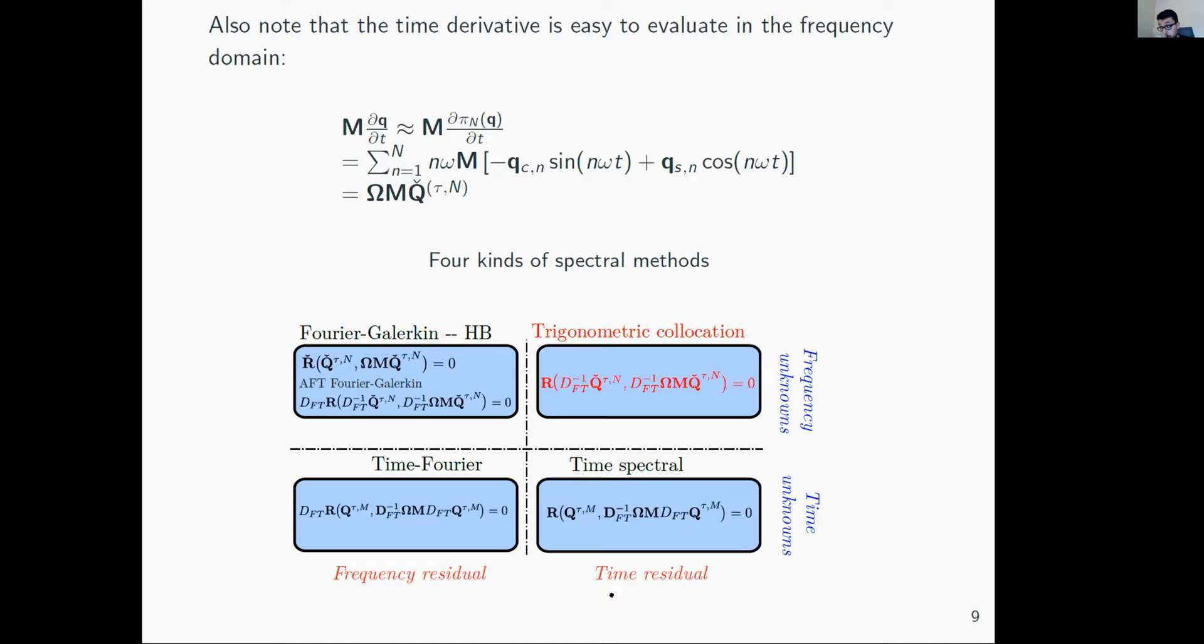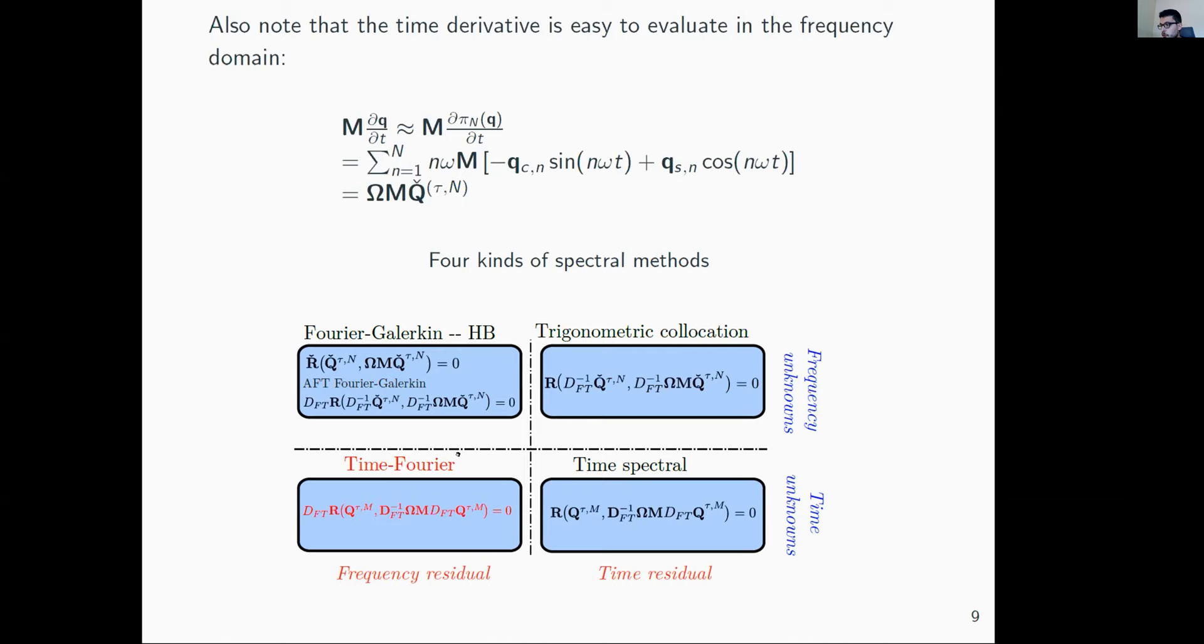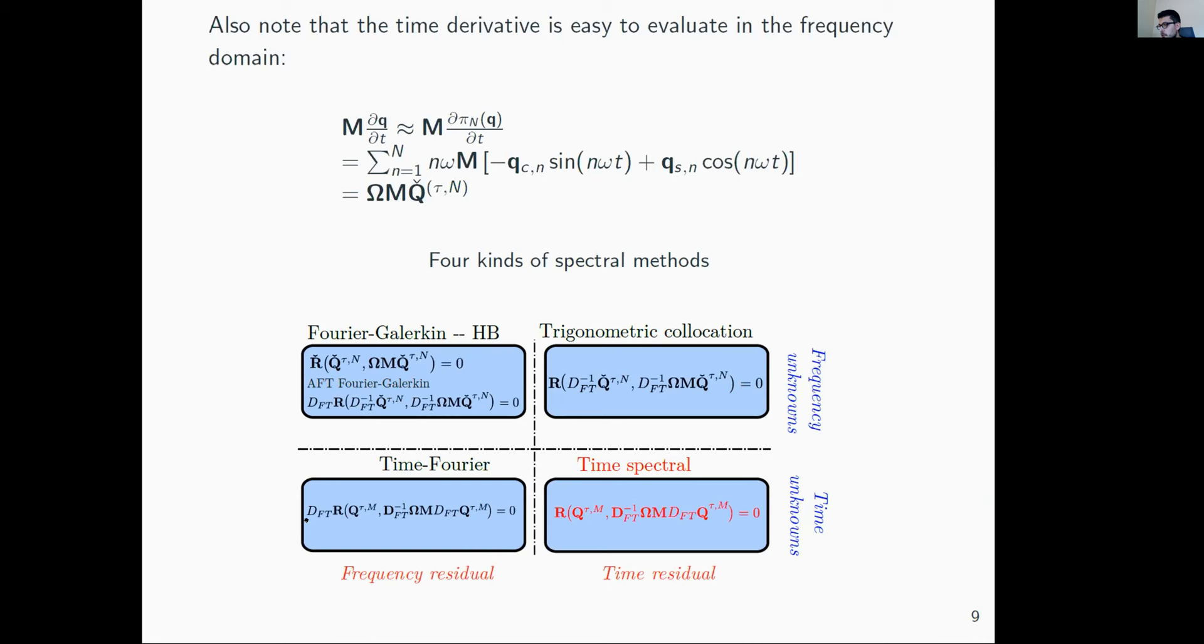Another method is trigonometric collocation where the residual is evaluated in time domain but unknowns are in frequency domain. We evaluate the derivative in frequency domain, pull it back, and that's all. The opposite is the time spectral method where we have a series of snapshots, put the solution vector to frequency domain, evaluate the derivative, pull it back, and at the end put it to frequency domain by applying a discrete Fourier transform.